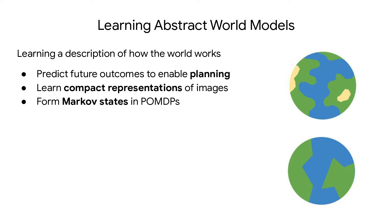World Models are abstract descriptions of how an environment works that are learned from experience. They allow agents to predict future outcomes to enable planning, they help learn compact representations of high-dimensional inputs such as images, and they can aggregate information over time to learn Markovian states in partially observed environments.